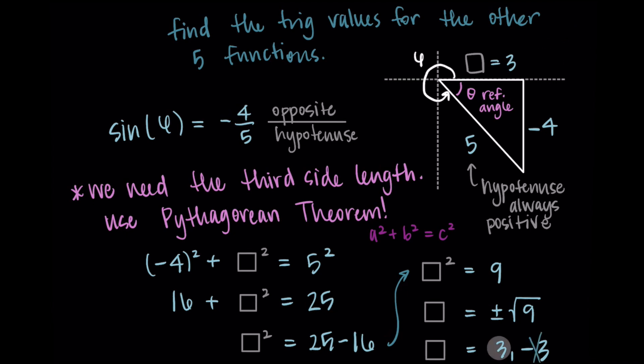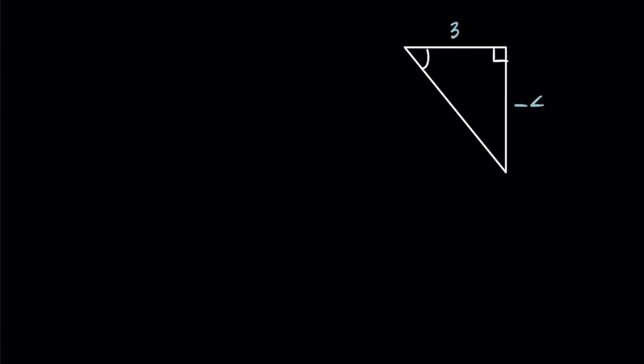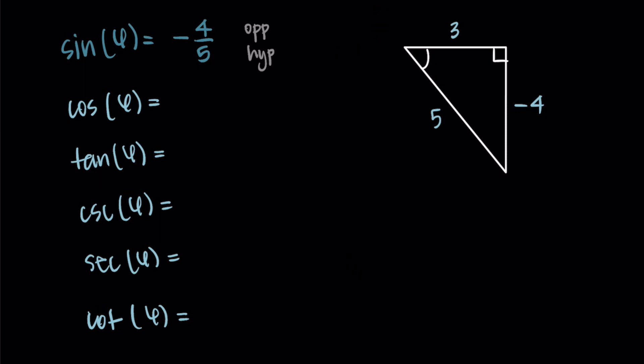In general, you just need to think through which quadrant you're in and whether the side length is positive or negative. Now we're ready to find the trig values. My side lengths are 3, negative 4, and 5. We were already given sine of phi is negative 4 over 5. For cosine of phi, that's adjacent over hypotenuse, which is 3 over 5. It's okay to refer to a reference sheet for the definitions as you're learning.